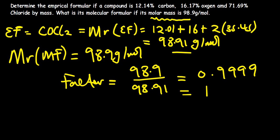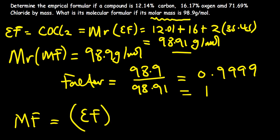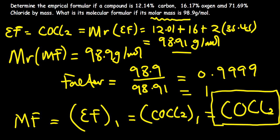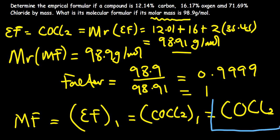It means our factor is just 1. So our molecular formula equals the empirical formula multiplied by the subscript 1, which gives COCl₂. We see that in this case the empirical formula is the same as the molecular formula. That's how we find the molecular formula — that's it for this question.